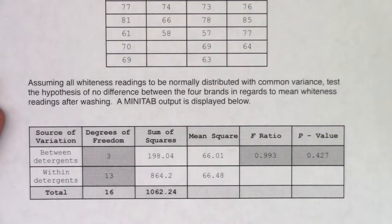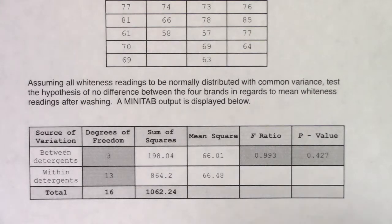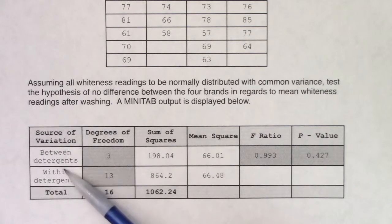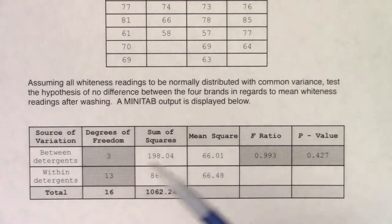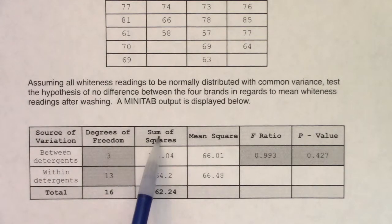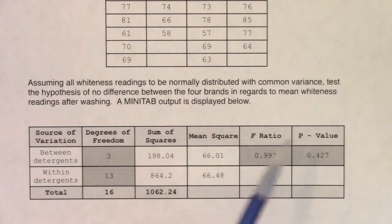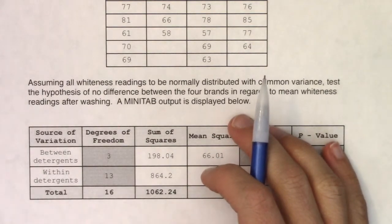Minitab uses the vocabulary terms 'between' and 'within.' I know that your calculator uses 'factor' and 'error,' but most stats programs use 'between' and 'within.' I'm not sure why Texas Instruments programmed your calculator that way, but it is what it is. So we've got the source of variation — between detergents, within detergents — our degrees of freedom, sum of squares, mean squares, F-ratio, and our p-value.